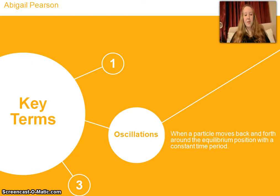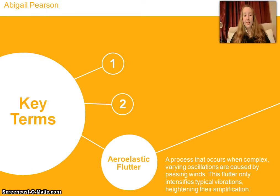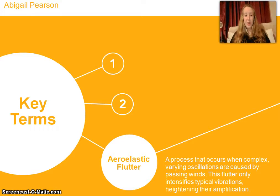Bridges collapse not only as a result of mechanical resonance, but also aeroelastic flutter. This is a process that occurs when complex varying oscillations are caused by passing winds. This flutter only intensifies typical vibrations, heightening their amplitude, which makes building structures that are capable of resisting these forces even more difficult.